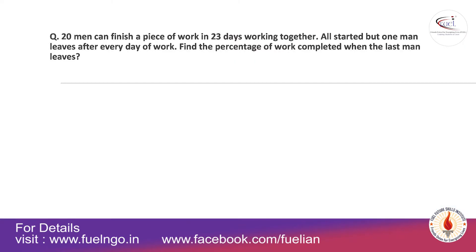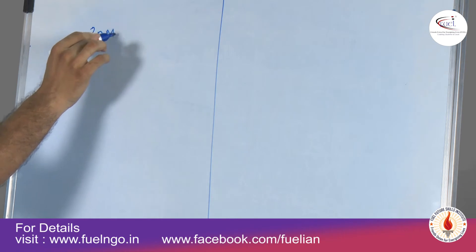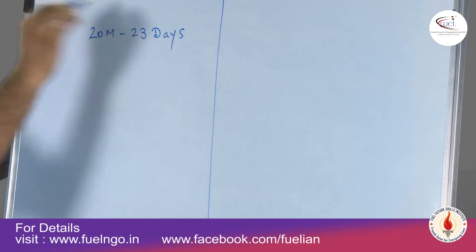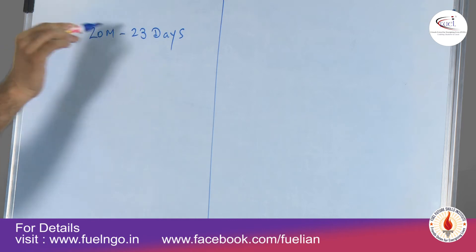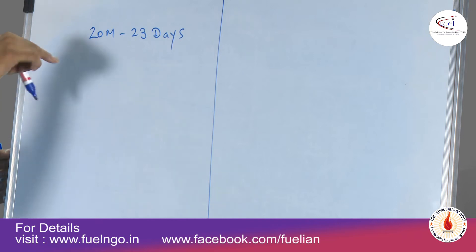We'll take one example: 20 men can finish a piece of work in 23 days. All started, but one man leaves after every day of work. Find the percentage of work completed when the last man leaves. So we have 20 men who can do a piece of work in 23 days, meaning one man can do it in 1/23 × 20 days.